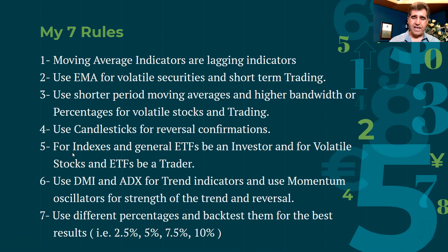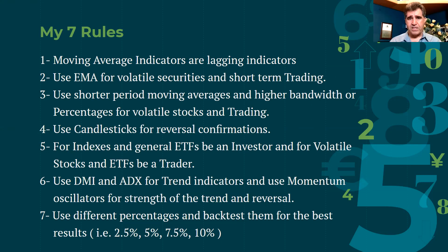Rule five: for indexes like S&P 500, Dow Jones, and general non-volatile ETFs, trade them as an investor using smaller percentages like 2.5%. For more volatile ETFs or individual stocks, be more of a trader and use larger envelope widths. The general principle is: more volatility requires higher bandwidth, less volatility allows lower bandwidth. For something like biotech stocks, you definitely don't want to use just 1% or 2.5% bandwidth - it's all trial and error.